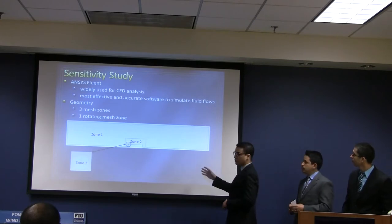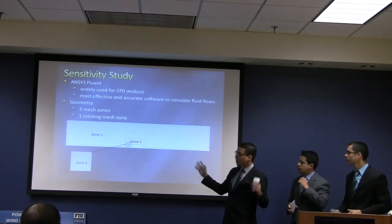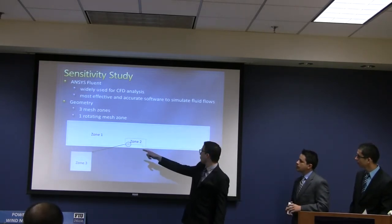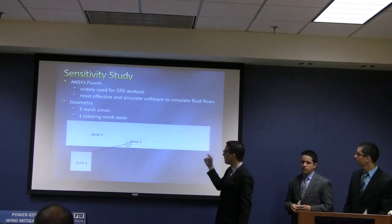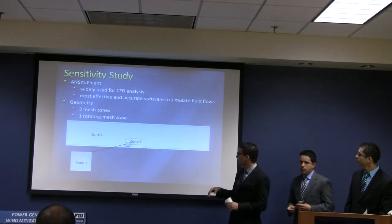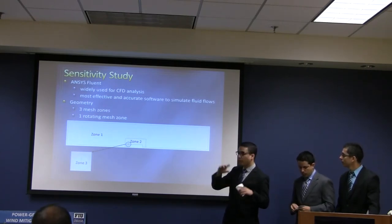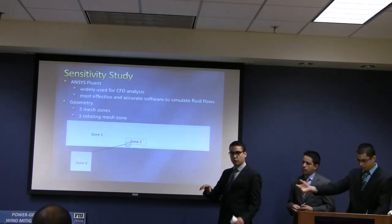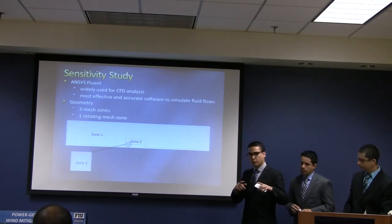This is the geometry that we created. As you can see, it's divided into three zones. The first zone is the outside flow — the inlet is on the left and the outlet is on the right, with pretty much laminar flow. Zone two is the area of interest: the flow around the house. And we have zone three, which is a rotating zone to simulate the fluid in a rotating turbine.